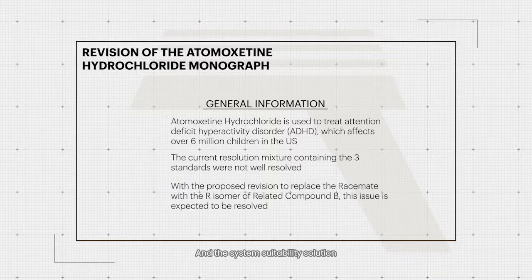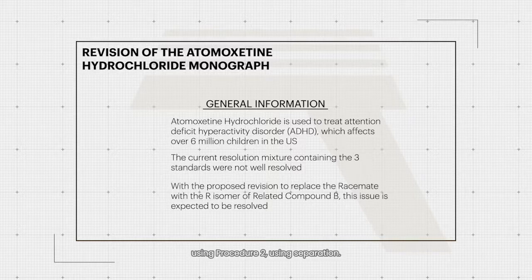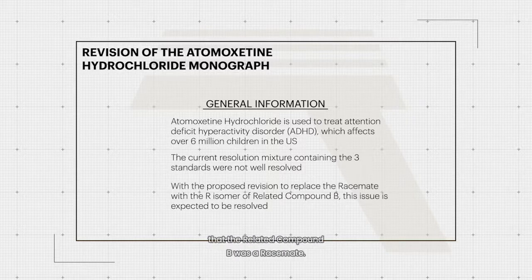When the system suitability solution containing USP Atomoxetine Related Reference Standard, USP Atomoxetine RC B reference standard, and USP Atomoxetine S-Isomer reference standard were initially tested using Procedure 2 with chiral separation, they showed three distinct peaks and failed to show that the Related Compound B was a racemate.